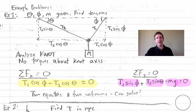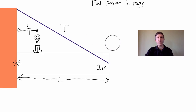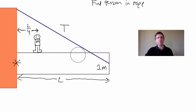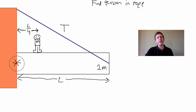Let's get on to a more interesting problem where we have to use the net torque to analyze it. We've got a wall and a big sign — the kind you see outside businesses, held up by a rope or chain. There's also a worker up here about to fix the attachment point. The sign is attached by some kind of pivot axis or attachment point right there at the wall.